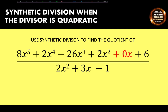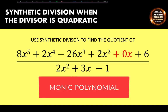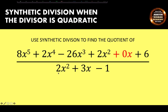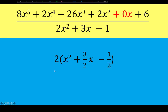Also, when using synthetic division, we want the divisor to be a monic polynomial — meaning a single-variable polynomial where the leading coefficient is 1. In our example, the leading coefficient is 2, so we factor the denominator as 2 times the quantity x² plus 3/2 x minus 1/2.